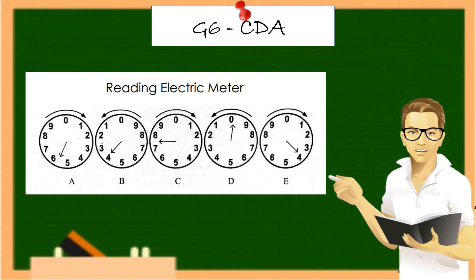The pointers alternately turn clockwise and counterclockwise. These dials measure the number of kilowatt-hours used. In this figure, the dials represent ones, tens, hundreds, thousands, and ten-thousands.